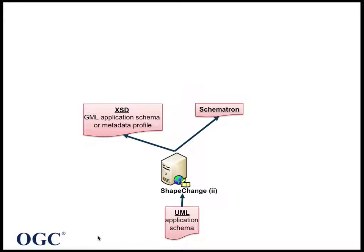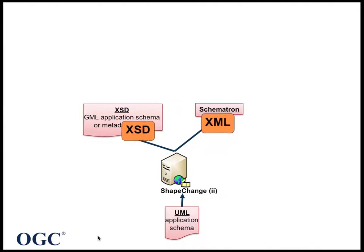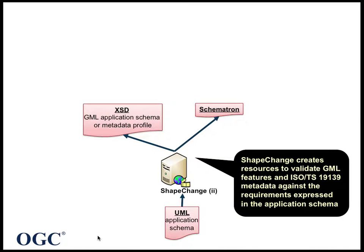Let's have a look at the steps involved. Our Shape Change tool takes a UML model, which may contain application schema or metadata profiling, and creates resources to validate GML features and/or ISO 11139 metadata against the requirements expressed in the application schema. Basic syntactic requirements are expressed using XML schema. All other constraints are expressed using Schematron.